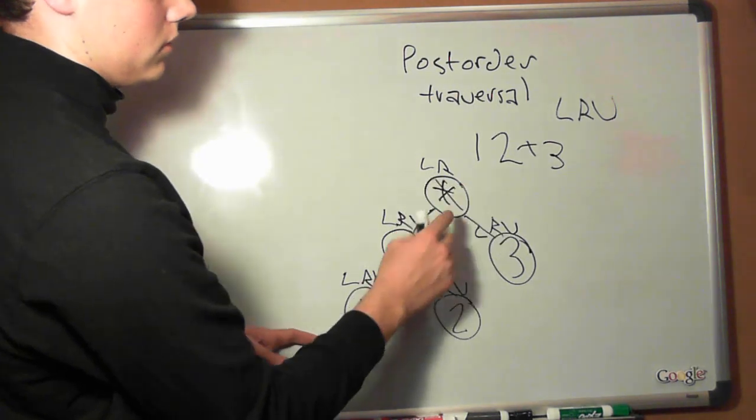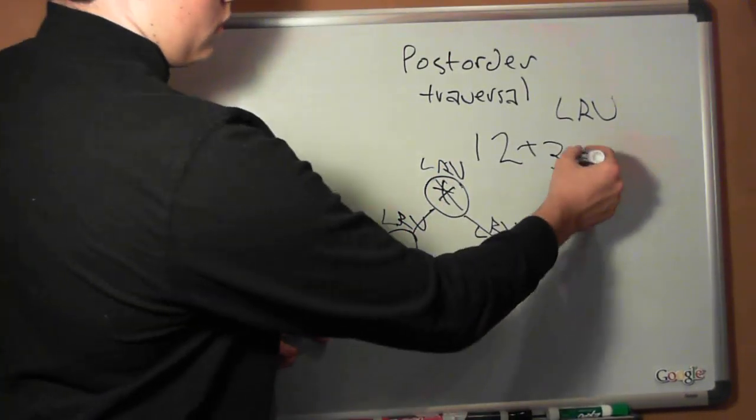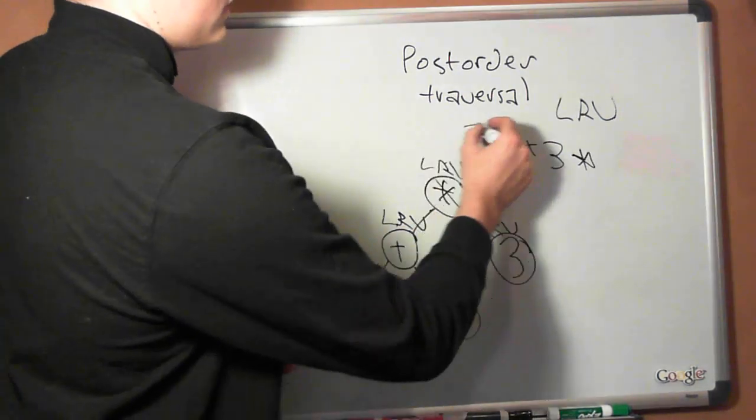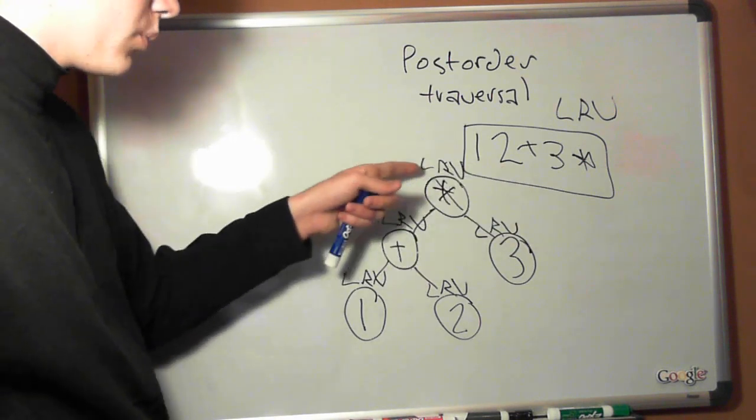We recursively call back up to this root node. We record the value, multiply. This is your final postfix notation of your expression.